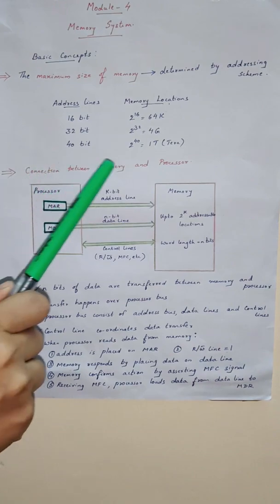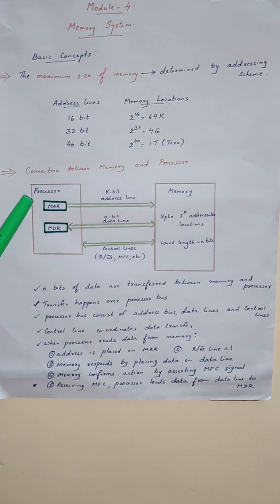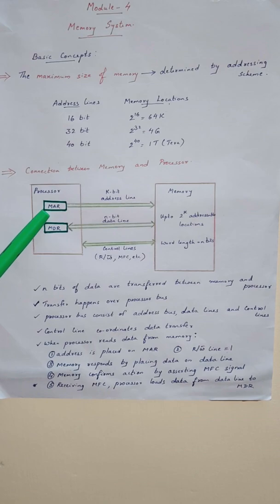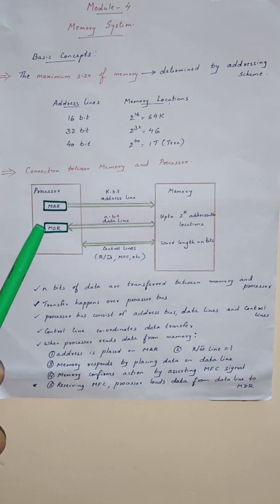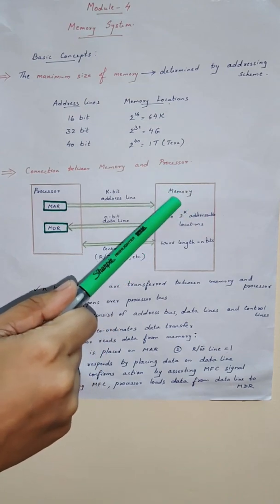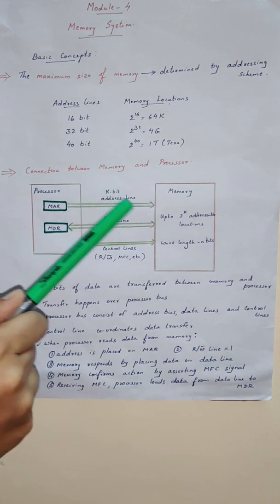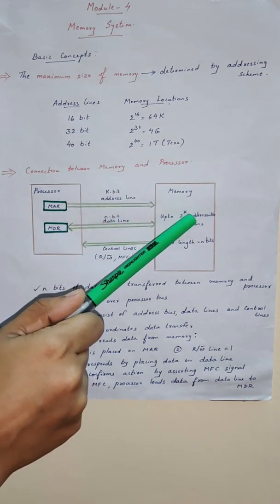Next is the connection between a memory and a processor. Before moving on to the description, I would like to give you a review on the major registers in a processor unit. We have the memory address register MAR, which holds the address of the memory. Next is the memory data register MDR, which stores the data that has to be written to the memory. The maximum size of a memory unit depends on the address line — if you have a k-bit address line, the maximum size is 2 to the power k.